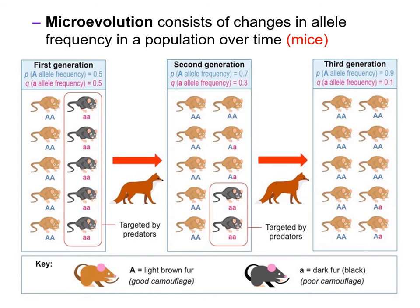Micro evolution consists of changes in allele frequency in a population over time. The population of these mice are going to change. The allele frequency would change over three generations. The first generation has about 50 percent little a alleles. Within the second generation it has been reduced to about 30 percent. And then finally in the third generation it has been reduced even further down to 10 percent. So that is micro evolution — these small changes to the population in reference to allele frequency.